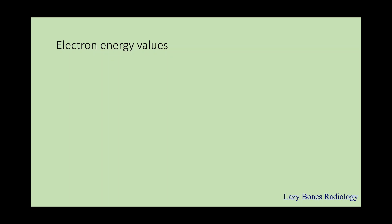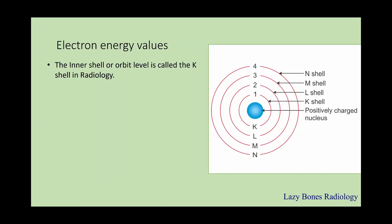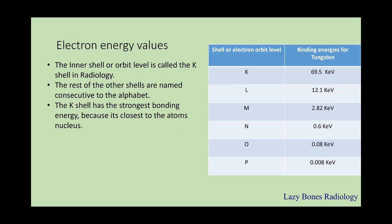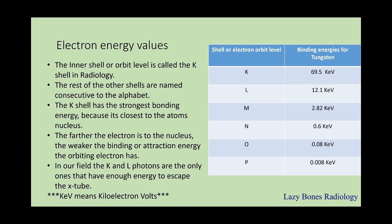Now that you have a basic knowledge of how characteristic interactions work, let's talk about the electron energy values. In radiology, the innermost electron shell is known as the K-shell, and the rest of the other shells are named consecutively in the alphabet. The K-shell has the strongest bonding energy because it is closest to the atom's nucleus. The table on the right-hand side shows how each level gets weaker and weaker as it gets away from the nucleus. The farther the electron is from the nucleus, the weaker the binding or attraction energy. In our field, the K and L photons are the only ones that have enough energy to escape the x-ray tube. A little side note: keV means kiloelectron volts.